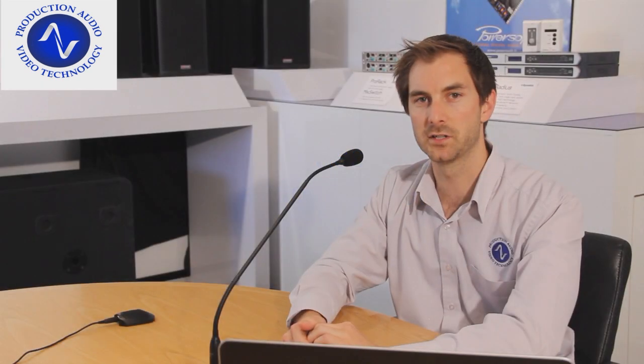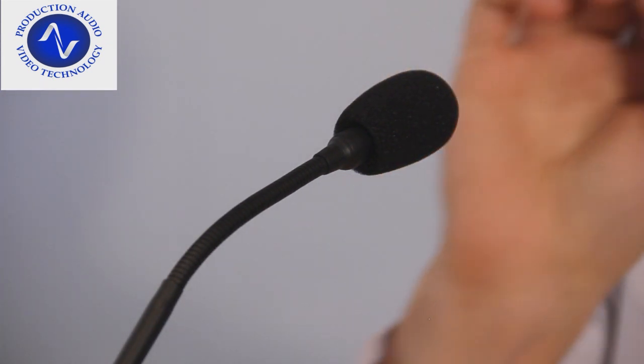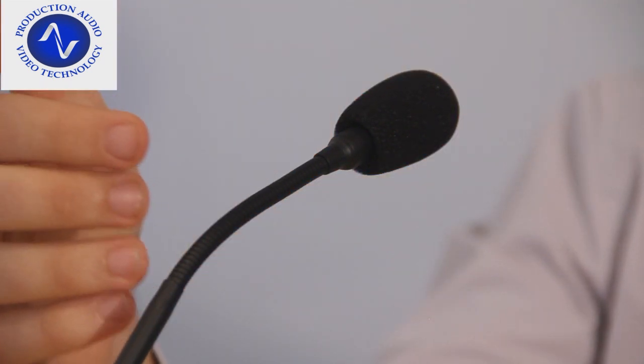The first microphone is an Audix MG15 gooseneck microphone. It's connected to an ATS table base, and the capsule on this microphone is a cardioid directional type, meaning it's intended to pick up preferentially sounds at the front of the microphone and reject sounds coming from the back.